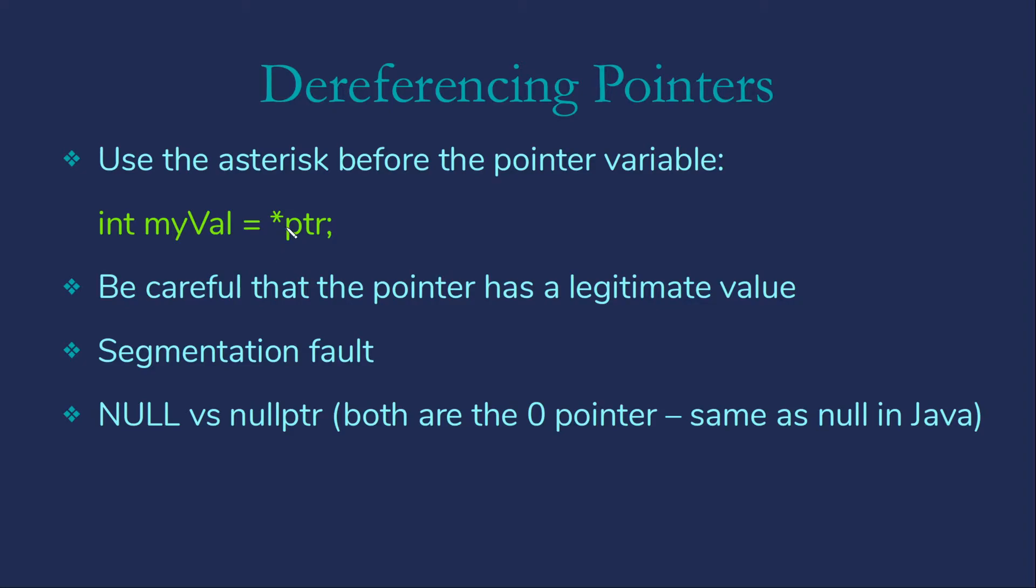Anytime you're going to dereference a pointer, you want to make sure that pointer has a legitimate value. You have a real risk of crashing your program if it doesn't. You're familiar with that notion if you've been doing programming in Java—the null pointer exception. We don't get an exception for that in C++. If you're in Linux or Unix, you're likely to see the words segmentation fault, which basically is the computer's way of saying you weren't allowed to access that memory. It doesn't belong to you. You're done.